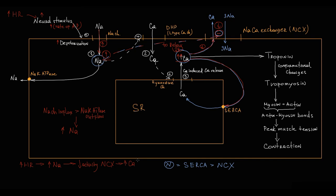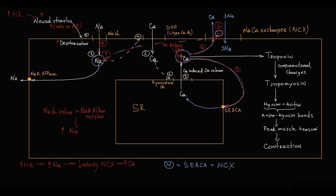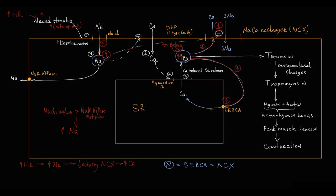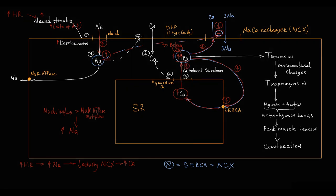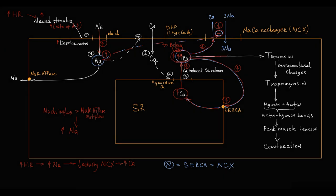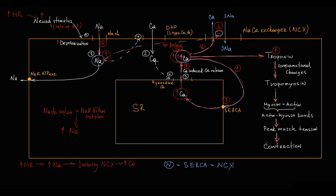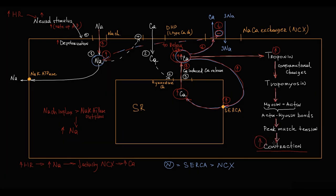We can say that an increase in heart rate limits the loss of intracellular calcium, thereby increasing cytosolic calcium levels. With higher cytosolic calcium, more calcium molecules must be pumped by SERCA into the sarcoplasmic reticulum to provide relaxation. This means more calcium accumulates in the sarcoplasmic reticulum for the next contraction, resulting in higher calcium release from the SR into the cytosol during the next contraction, and therefore a higher force of contraction — and this is the Bowditch effect.